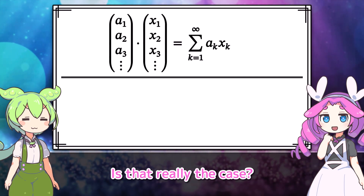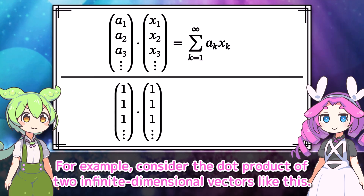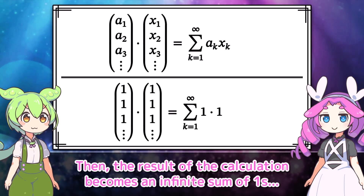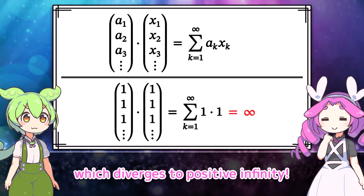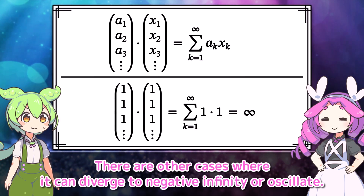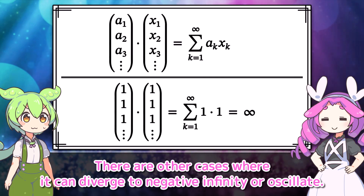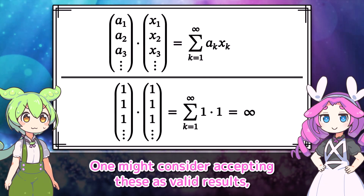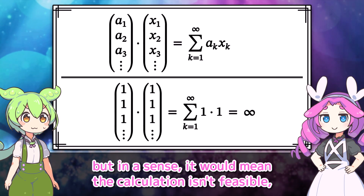It doesn't seem problematic. Is that really the case? For example, consider the dot product of two infinite-dimensional vectors like this. Then the result of the calculation becomes an infinite sum of ones, which diverges to positive infinity. What happened? There are other cases where it can diverge to negative infinity or oscillate.